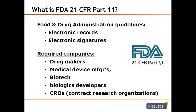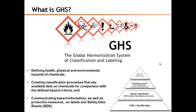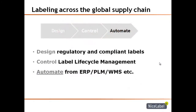The FDA 21 CFR Part 11 standard covers Food and Drug Administration guidelines for electronic records and electronic signatures. These are very stringent requirements because of what is being labeled in prescriptions, drugs, biotech, or contract research organizations — there's a lot that can go wrong and people's lives are at stake. When it comes to GHS, the Global Harmonization System of Classification and Labeling, when dealing with chemicals, lives are at risk if you have the wrong warnings or the wrong symbols on those templates. These GHS symbols are built into our NiceLabel Pro design tool in the clip art gallery, so you can easily add high resolution images to your template.